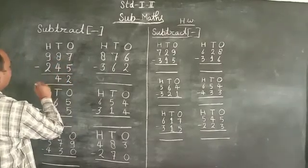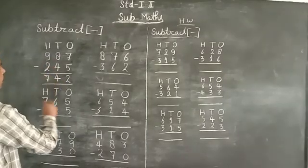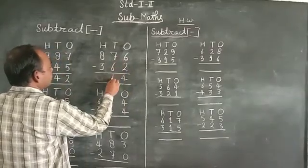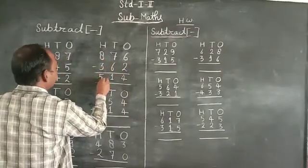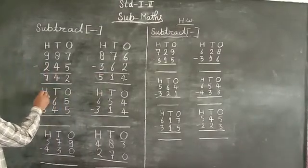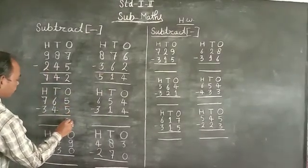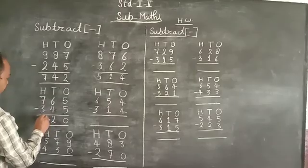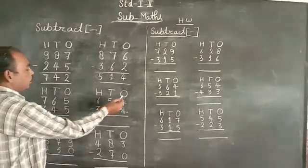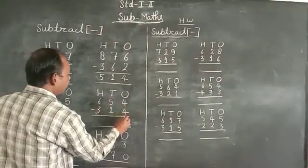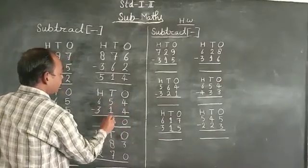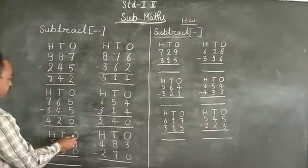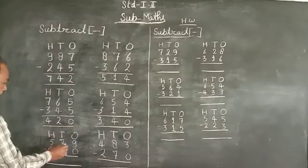Next set of subtraction problems: 5-5=0, 6-4=2, 7-3=4. Another set: 4-4=0, 5-1=4, 6-3=3. And: 9-0=9.